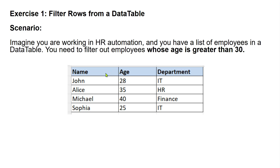Pay close attention to the table. It has got names of the employees, it has age, it has department. The requirement is to filter out those whose age is greater than 30. Looking at this data you can clearly say Alice is greater than 30 and Mikhail is greater than 30, so the output should show these two rows of data.